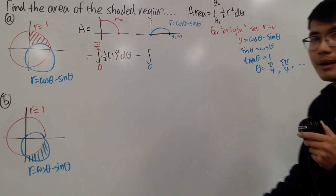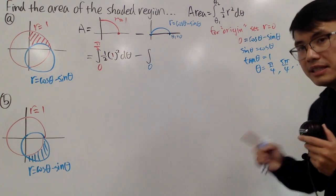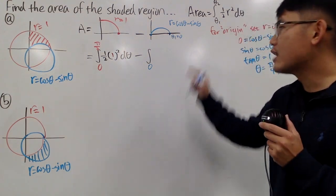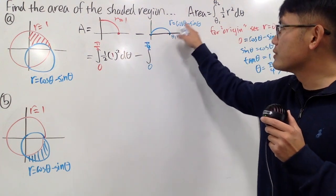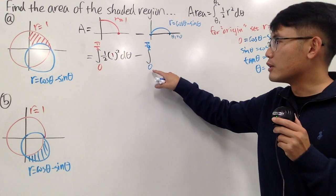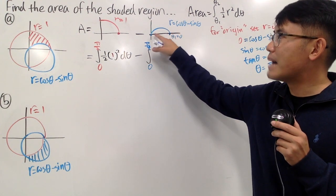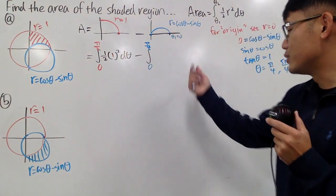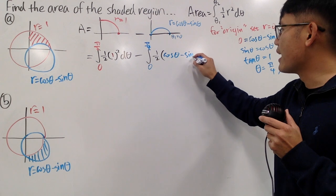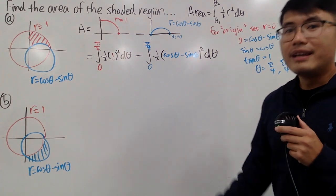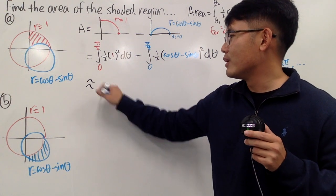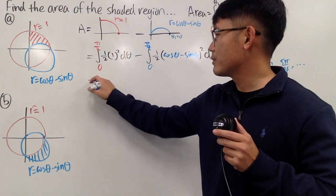When theta equals pi over 4, this is the first time the curve hits the origin — r equals 0 for the first time. Since our starting angle is 0, we look for the first time r is 0. So theta 1 is 0 and theta 2 is pi over 4. We can now write the formula: one-half times the quantity cosine theta minus sine theta, squared, d theta. You can do this integral by hand or with a calculator — I'll leave that to you.